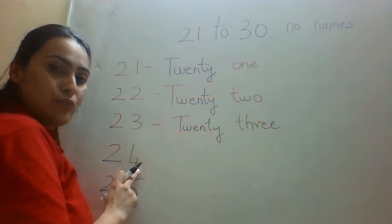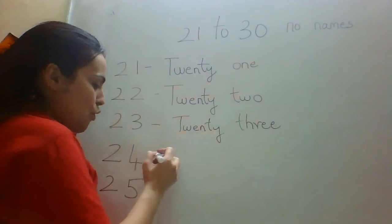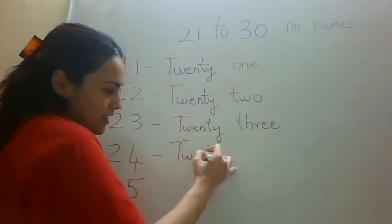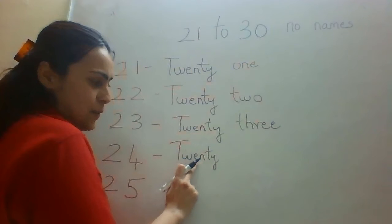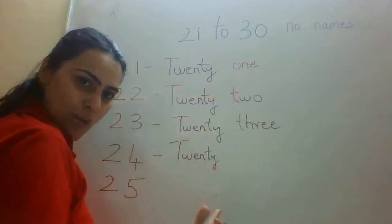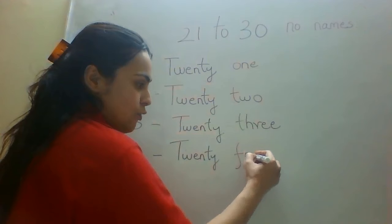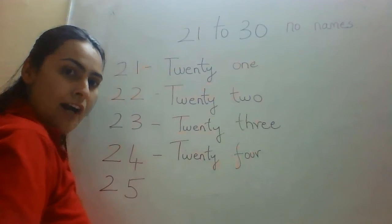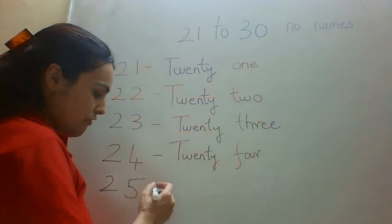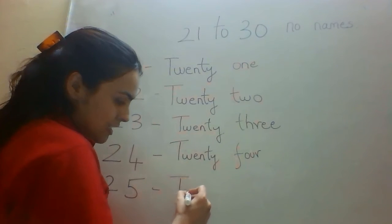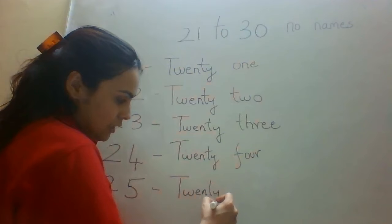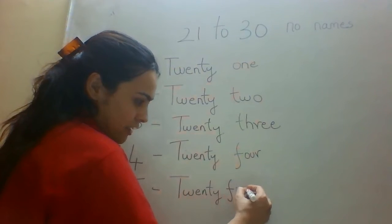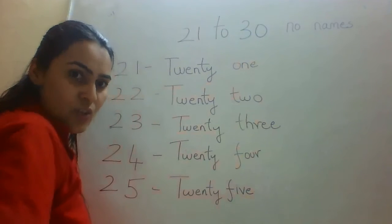Then we have 24. So the spelling of 24 is very simple — same spelling: T-W-E-N-T-Y, and 4, spelling F-O-U-R. Then we have 25: T-W-E-N-T-Y, and 5, spelling F-I-V-E. So this is 25.